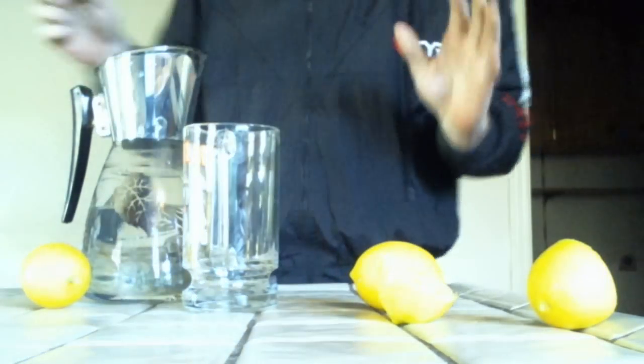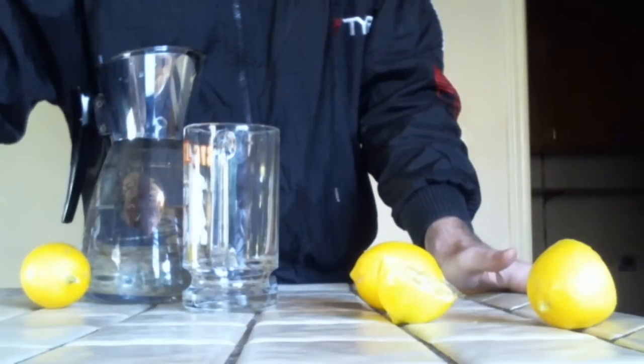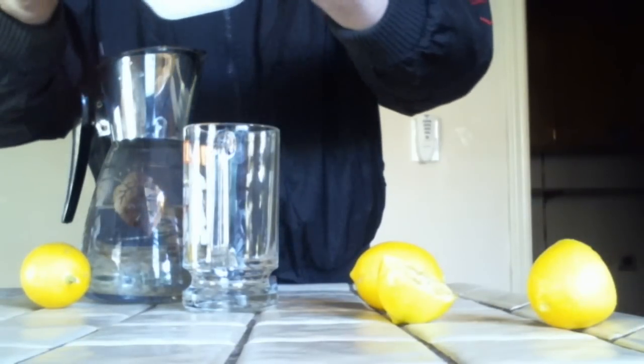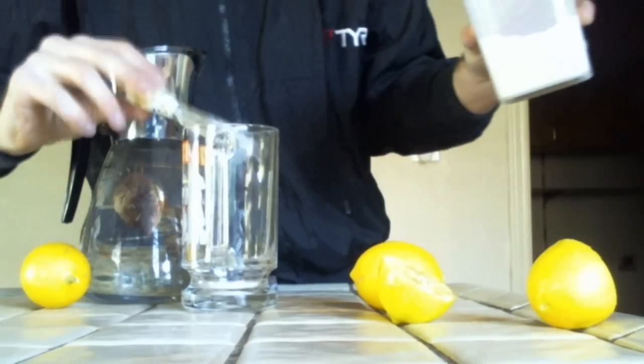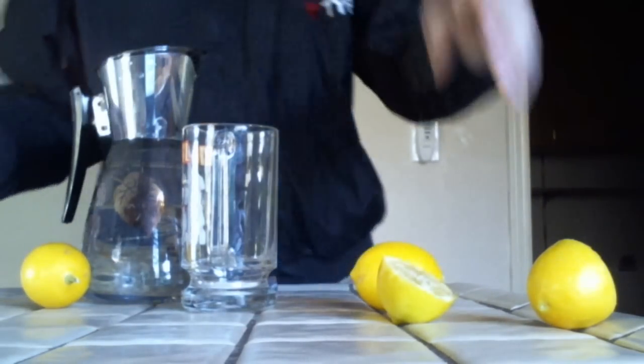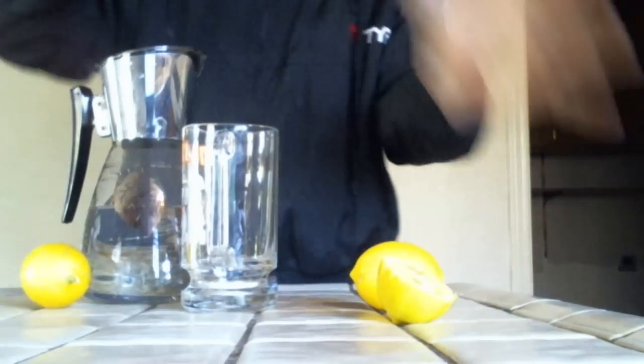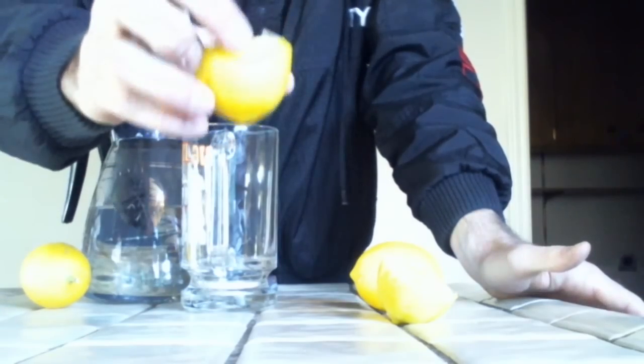So to get right into it again, half a teaspoon of baking soda and the juice of half of a lemon. I usually use a lemon squeezer. I don't have it on me, however, so I'm just going to be doing it by hand.